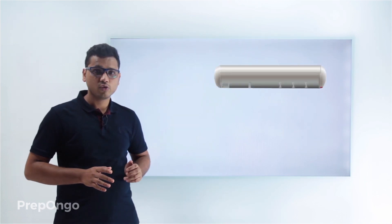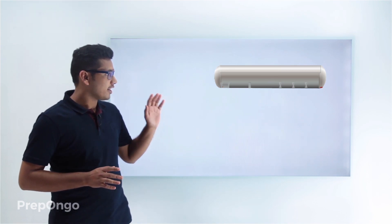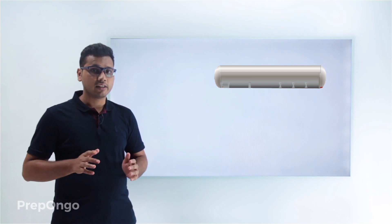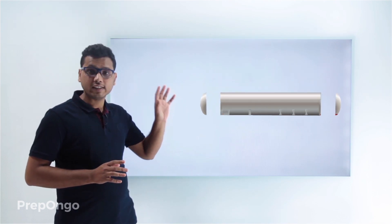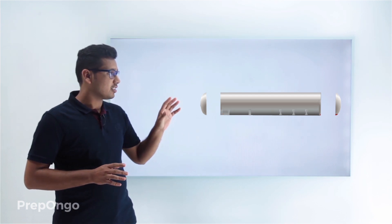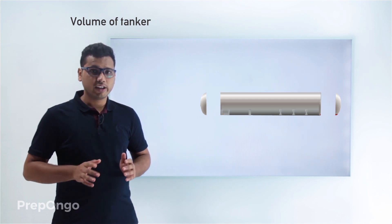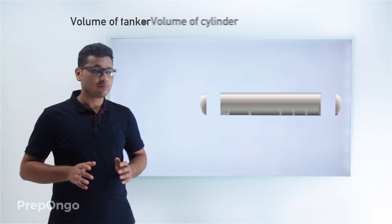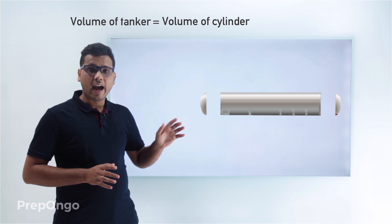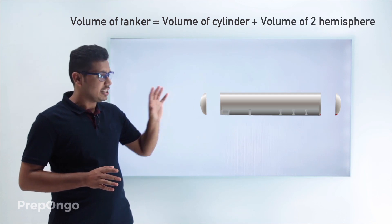Now just consider this oil tanker or water tanker — you might have seen this. If you look at the shape of this water tanker you will find that we can divide this shape into one cylinder and two hemispheres. So if we have to calculate the volume of this water tanker, all we have to do is add up the volume of this cylinder and the volume of these two hemispheres.